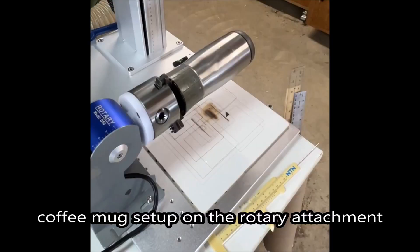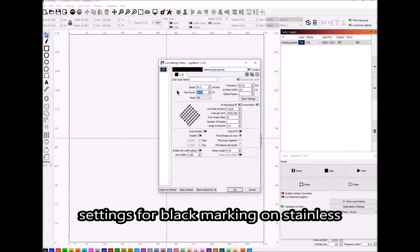This shows the setup with the coffee mug on the rotary. Here I'm going to load that file that we created in Logitrace into Lightburn.